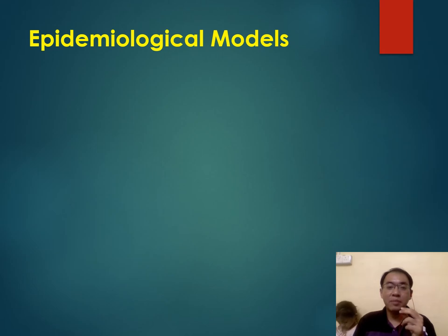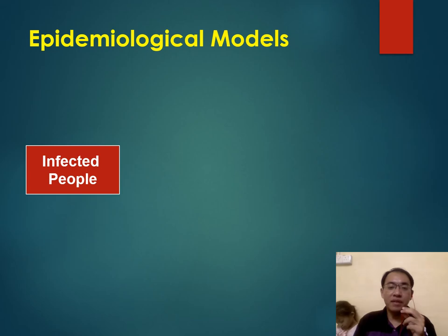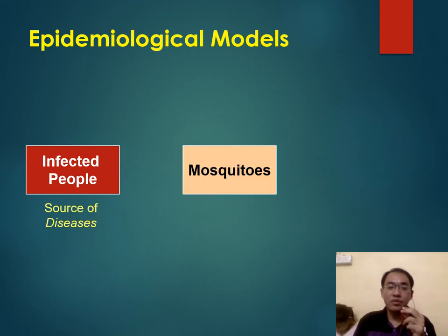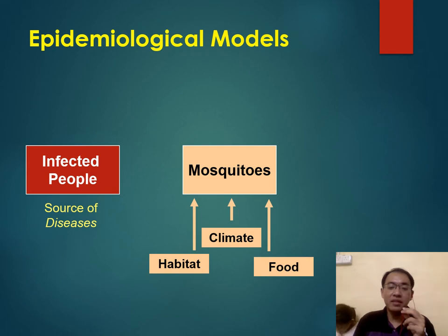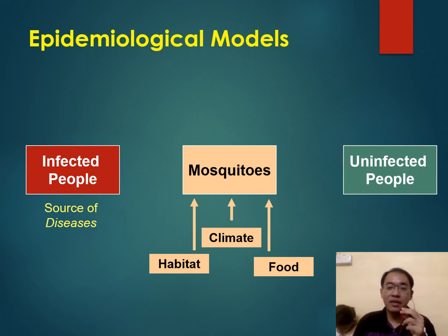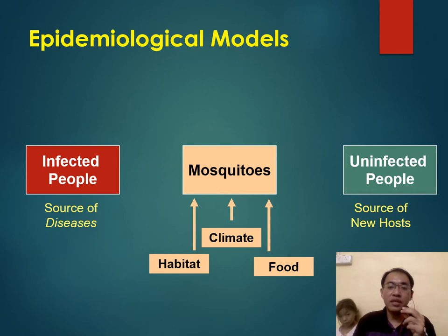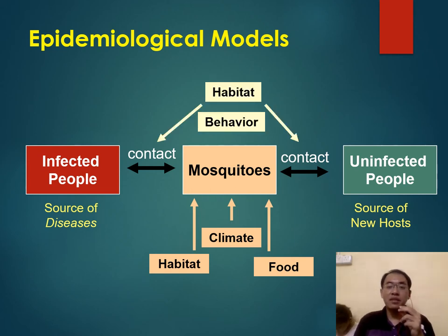Now let's look at the epidemiological model of mosquito-transmitted diseases. In this model, we have infected people, mosquitoes that live happily under a suitable habitat, climate, and with food supply, and we also have uninfected people that serve as the source of new hosts. These two groups of people will get in contact with mosquitoes that serve as the vector for disease transmission. The mosquitoes are around us because we share the same habitat or we go out during their feeding time.